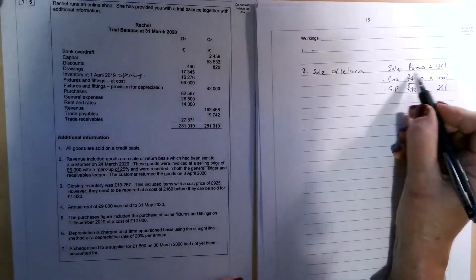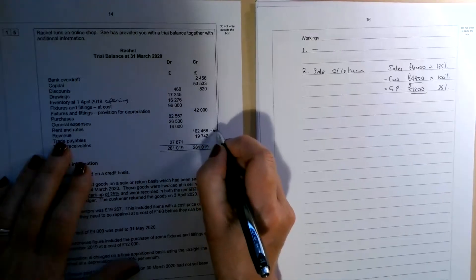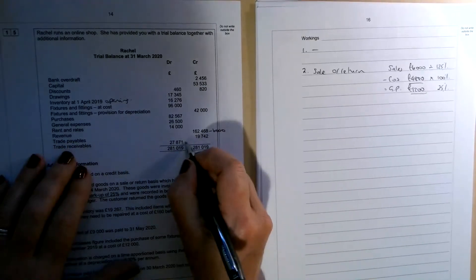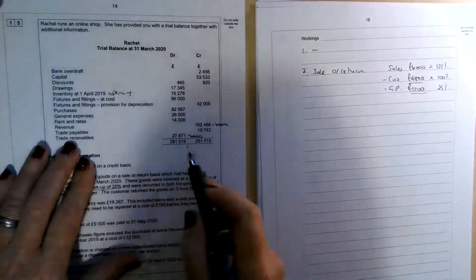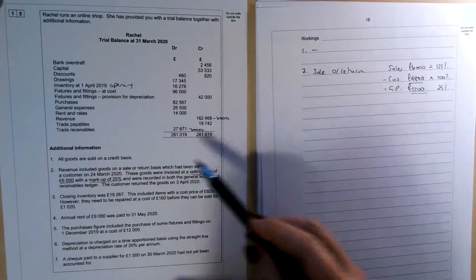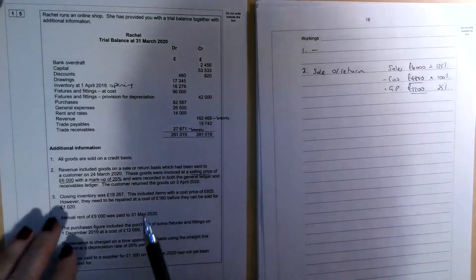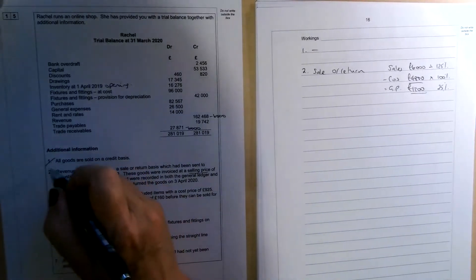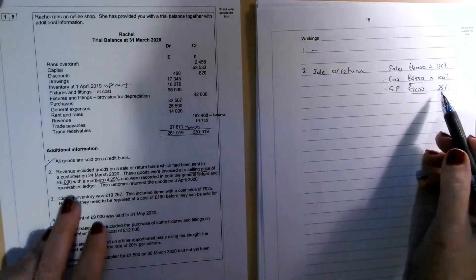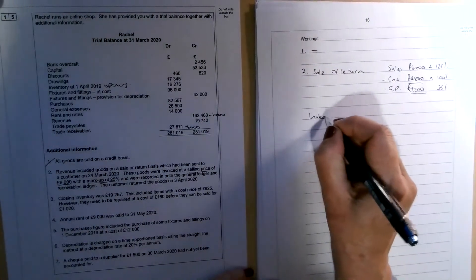So the way we've got to deal with this then is to get rid of £6,000 out of sales revenue. Just for completeness, we'd also be getting rid of that out of the trade receivables figure. So it's important that we do that in case further down the line, we need to calculate something like a provision for doubtful debts, for example. So that's number two dealt with in terms of the sale, but we've also got to sort out inventory.